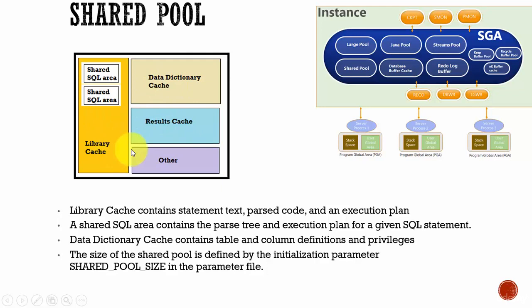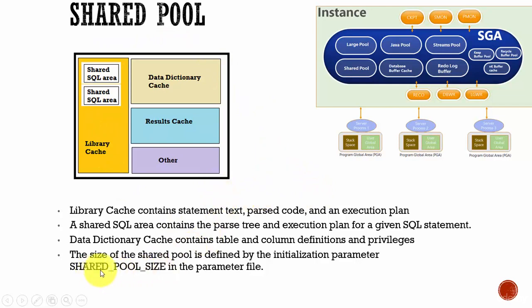Apart from these three main memory structures, there are some other small memory structures within the Shared Pool to store your parallel execution messages, control structures, and locking information. We can define the total size of the Shared Pool using the initialization parameter SHARED_POOL_SIZE.